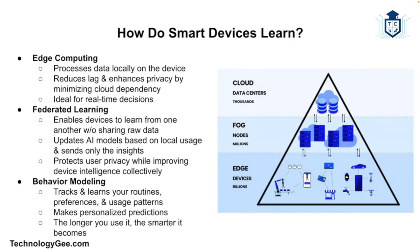How do smart devices learn? AI in smart devices is often powered by edge computing — processing data directly on the device instead of sending it to the cloud. There's also federated learning, which shares learning across devices while keeping your data private, and behavior modeling, which recognizes patterns in your habits to make accurate predictions. Data is everything — the more your device knows about you, the better it gets at serving you. Some people think this is creepy, some think it's cool, but you have to make the ultimate decision on that.